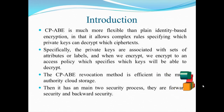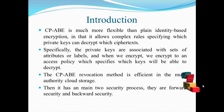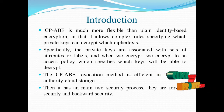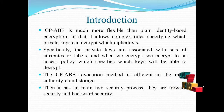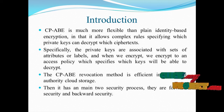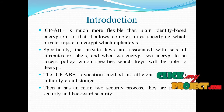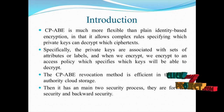Introduction: CP-ABE is much more flexible than identity-based encryption in that it allows complex rules specifying which private keys can decrypt which ciphertext. Specifically, the private keys are associated with sets of attributes or labels, and when we encrypt, they encrypt to a policy which specifies which keys will be able to decrypt. The CP-ABE revocation method is efficient in multi-authority cloud storage. It has two main security processes: forward security and backward security.